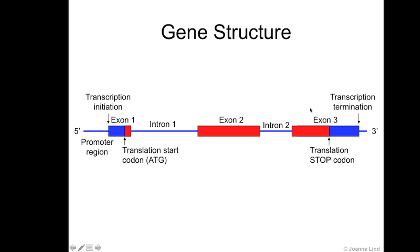At the other end of the gene, you will find a corresponding translation stop site, where the translation stop codon exists. And then there is a section that would be within your RNA but not coded for in your protein, which is your 3' untranslated region. That is coded for within the DNA, usually within the last exon.